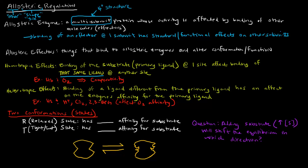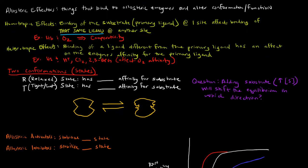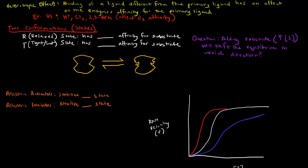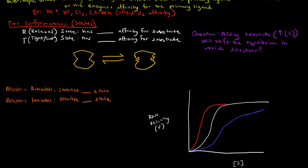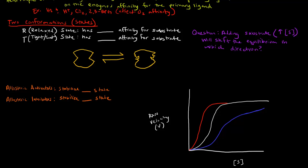Allosteric enzymes have two states — or two conformations — that we think about. There is the relaxed state, called the R state, and the T state, also known as the tight or taut state. The R state has a high affinity for the substrate, and the T or tight state has a low affinity for the substrate.